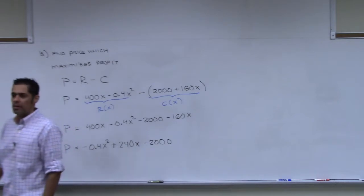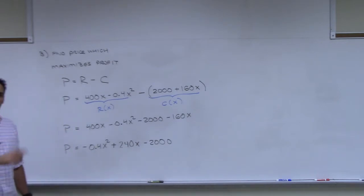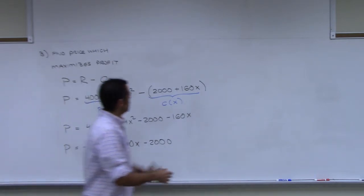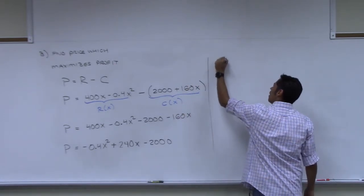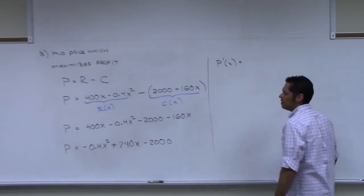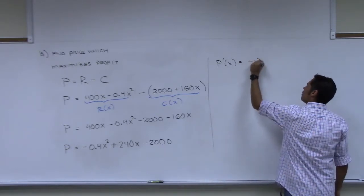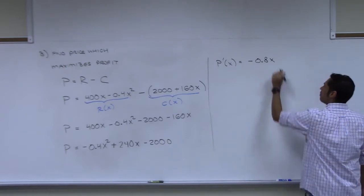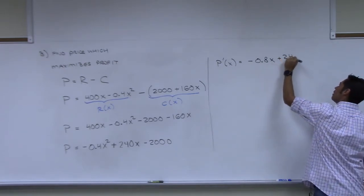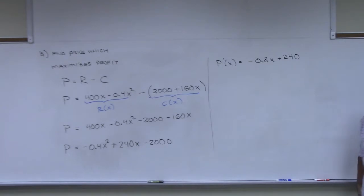This is our profit function. Positive 240. Oh yeah, I don't know why I put minus. This is plus. 400x take away 160x is 240x. Okay, now what? Find the derivative.